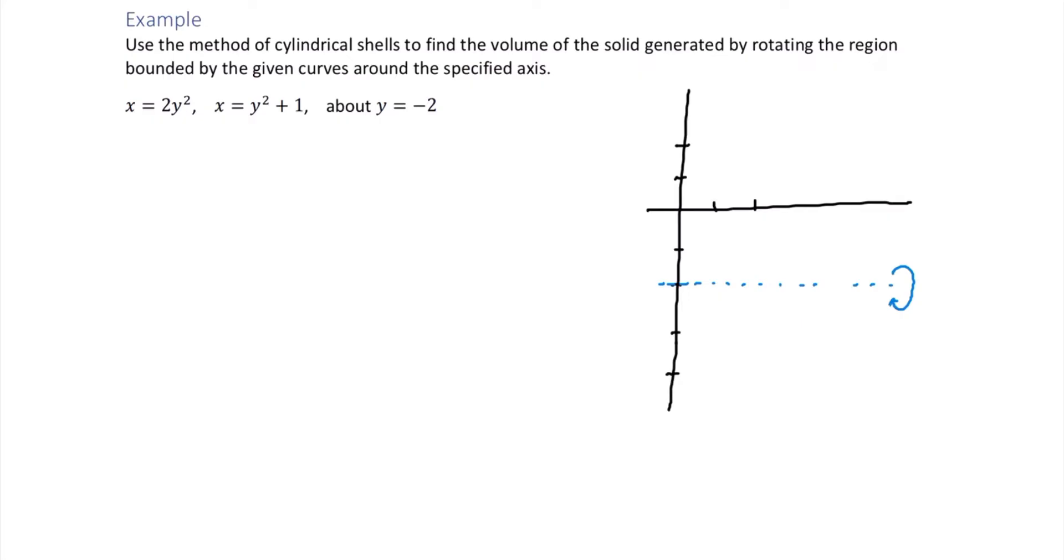Up first, we have x equals 2y squared. If we plug in 0 for y, we'll get 0. If we plug in 1 for y, we'll get x equals 2. And if we plug in negative 1 for y, again, we get x equals 2.